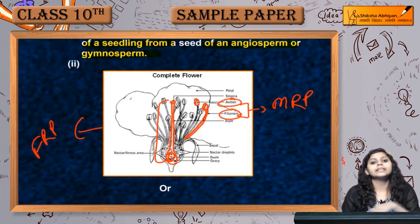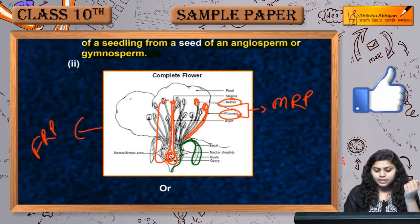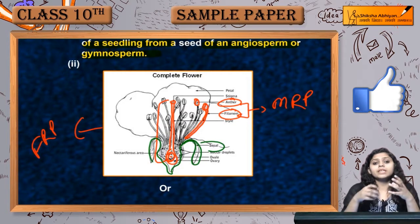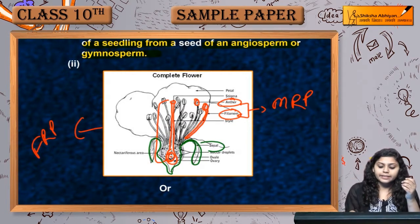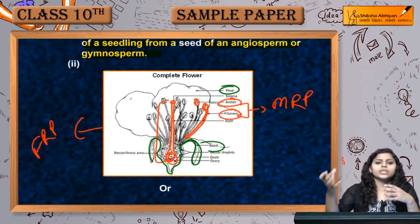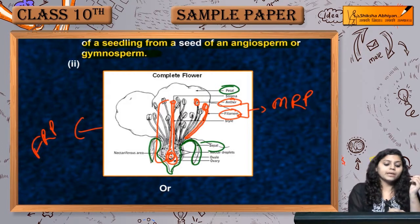Now let's talk about the accessory parts of the flower. The green leaf-like part of the flower is called the sepal. And the colourful part is the petal, which attracts insects or a pollinating vector. So this is the complete flower structure.